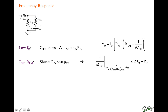The frequency where the capacitor impedance equals this series combination of resistors is that pole — the equivalent RC frequency. When frequency is much less than this equivalent RC frequency, the capacitor doesn't shunt it. But when frequency is much greater than this RC frequency, we have that shunting effect producing the effect of a pole.